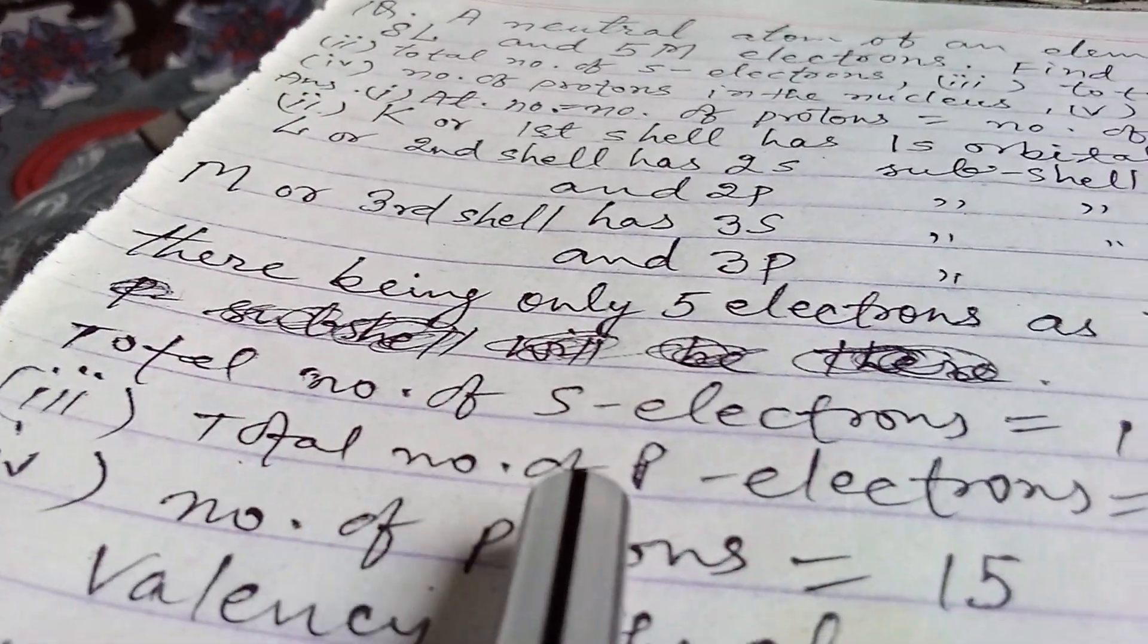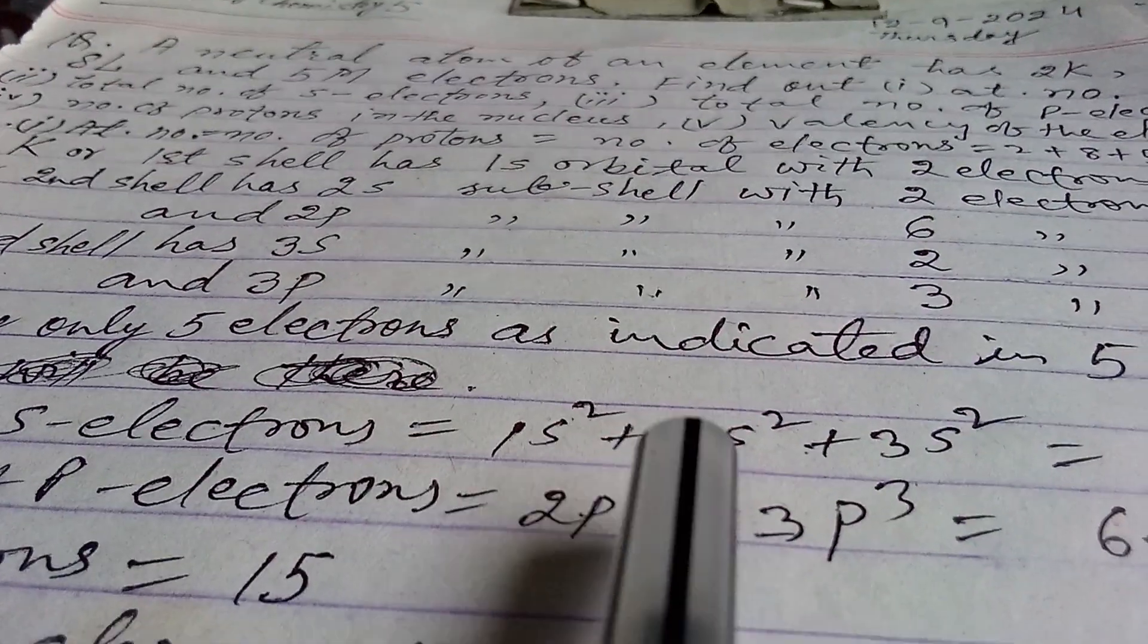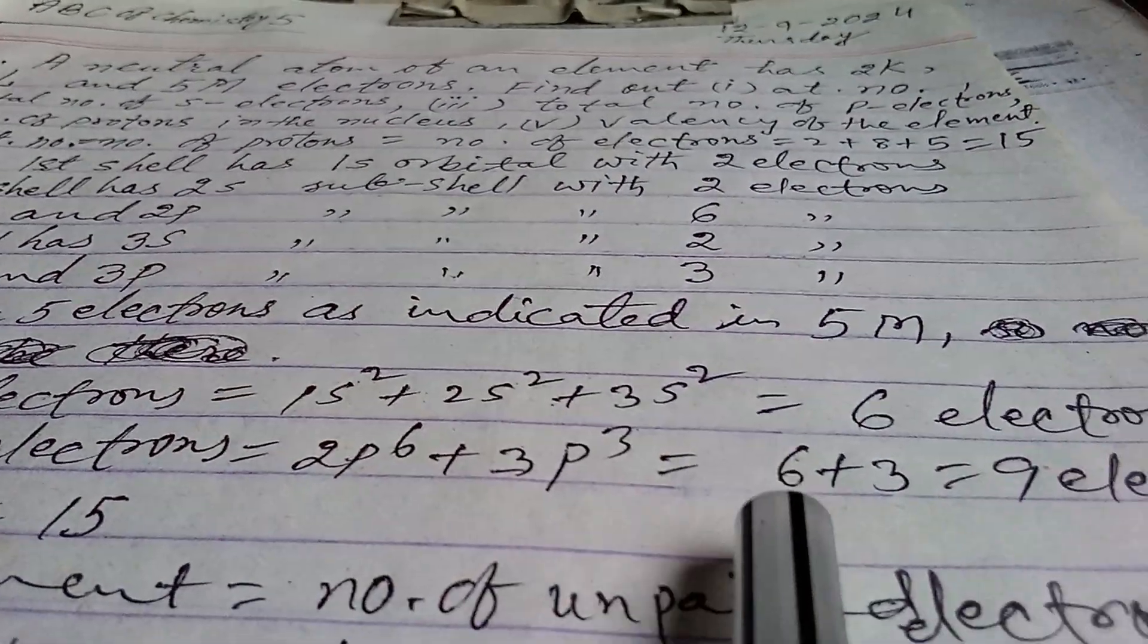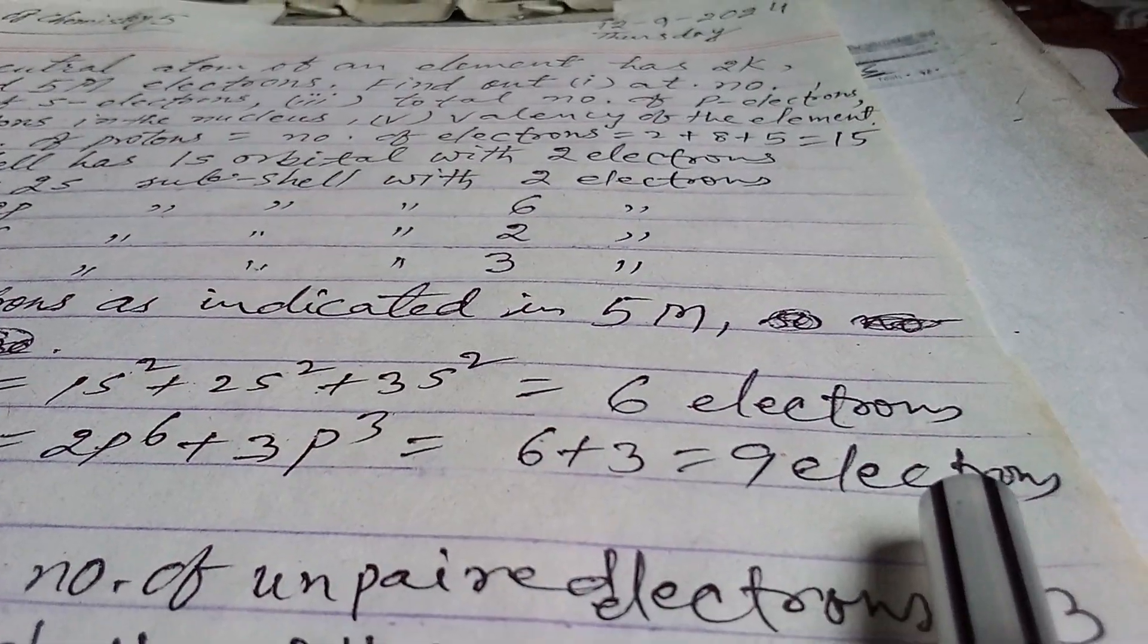And third is, total number of p electrons is equals to 2p6 plus 3p3, that is equals to 6 plus 3, that is 9 electrons.